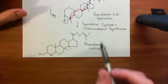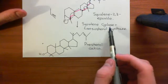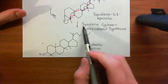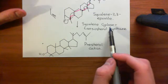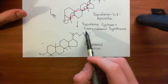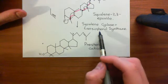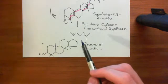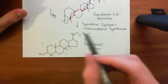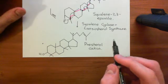The next reaction is going to be catalyzed by the same enzyme, which we've called squalene cyclase, and it's also got this other name, lanosterol synthase. It's named because of this second reaction, which we're now going to see, which is going to result in the production of lanosterol.